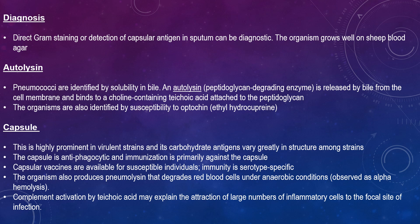Regarding the capsule: it is highly prominent in virulent strains and its carbohydrate antigens vary greatly in structure amongst strains. The capsule is anti-phagocytic and immunization is primarily directed against the capsule. Capsular vaccines are available for susceptible individuals, and immunity is serotype-specific. Using appropriate type-specific antiserum, the capsule-antiserum reaction becomes visible under microscopy — this is used in microbial identification in what is known as the Quellung reaction. The organism also produces pneumolysin, which degrades red blood cells under anaerobic conditions, observed as alpha-hemolysis. Complement activation can also occur via teichoic acid, explaining why large numbers of inflammatory cells are recruited to the focal site of infection.